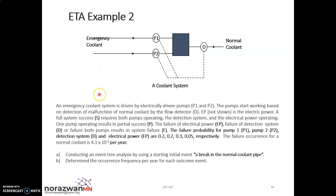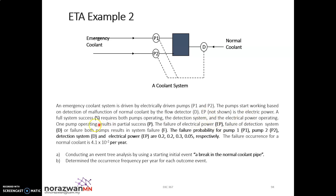For this example, we will look at what the system is about. It is a cooling system. An emergency cooling system is driven by electrically driven pumps — pump one and pump two. The pumps start working based on detection of malfunction of normal coolant by the flow detector D. EP, which is not shown, is the electrical power. Full system success requires both pumps operating, the detection system D, and the electrical power EP all operating.